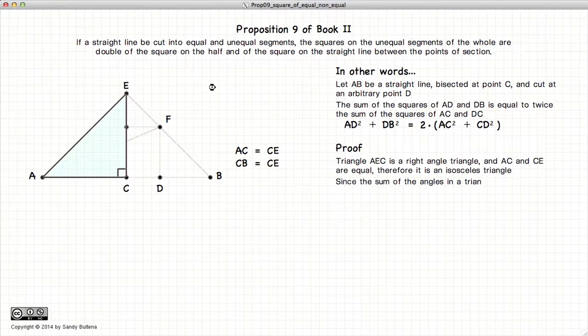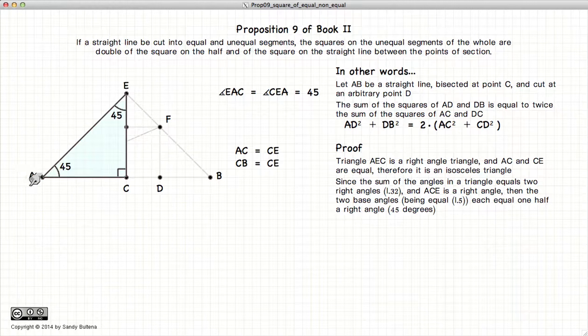Now if we look at our triangle AEC, since AC is equal to CE, then this triangle is an isosceles triangle. And as an isosceles triangle, the two base angles will be equal. But we also know that the sum of all the angles will equal 180 degrees. We know that angle C is 90 degrees, since that's the way we drew it. So these two angles, A and E added together, has to equal one more right angle.